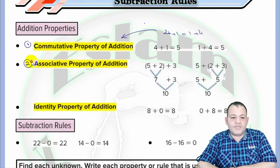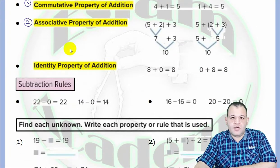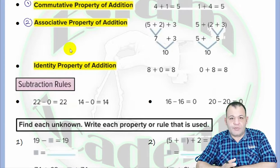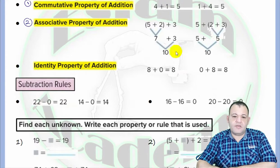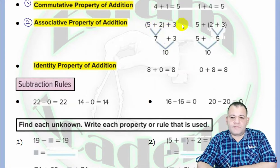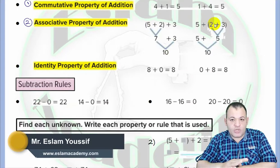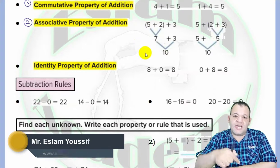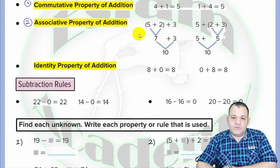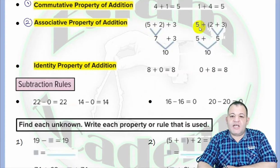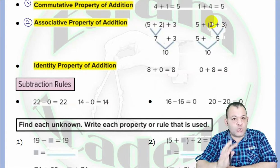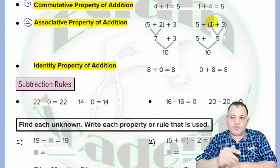The second property is defined by the associative property. In the associative property, you have three numbers with the same order on both sides. For example, we have 5, 2, and 3 on the left and 5, 2, and 3 on the right — the same order. But you change the numbers inside the brackets, the grouping symbol. So you have 5 plus 2 plus 3, but with different groupings: (5 + 2) + 3 or 5 + (2 + 3). You keep the same order but change the numbers inside the parentheses.